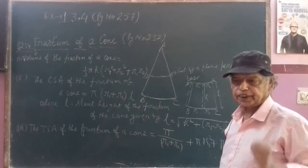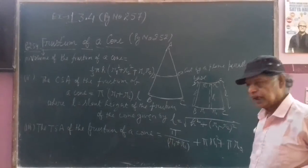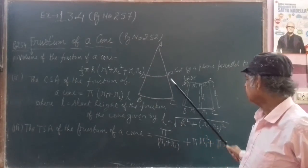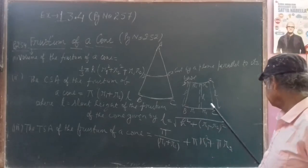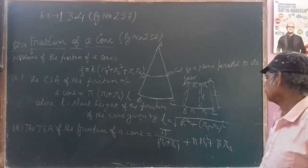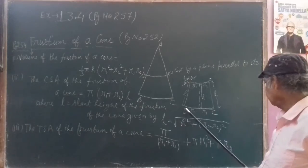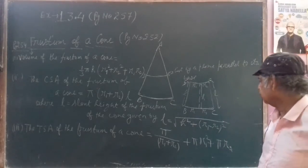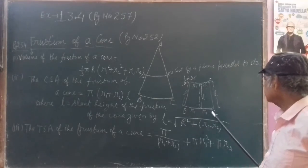The frustum of a cone has some good real-world examples — suppose a bucket. It is a cone problem. A cone has been cut across the top. There are two radii: the lower radius R1 and the upper radius R2. R1 is the radius of the lower portion and R2 is the radius of the upper portion of the frustum. H is the straight height and L is the slant height.